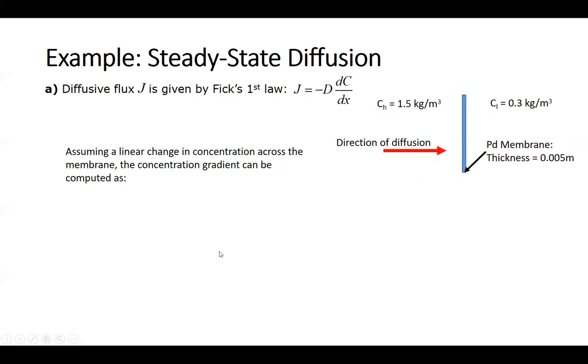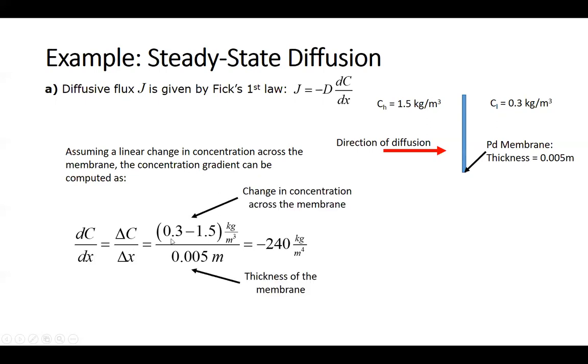We're going to assume a linear change in the concentration across the membrane, and if we do that, the concentration gradient can be computed as dC/dx equals delta C over delta x across the membrane, where we need the change in concentration across the membrane for the numerator, and for the denominator, which is just the thickness of the membrane. If we plug these numbers in, we end up with a concentration gradient of negative 240 kilograms per cubic meter to the fourth.